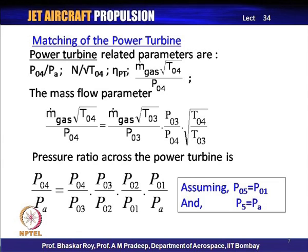If we look at matching of a power turbine — also called free turbine — it is often used for powering the fan or propeller in a two-spool engine. The power turbine and whatever it is powering (fan or propeller) are on a separate power shaft, and this needs to be matched separately from the core generator matching. The power turbine related parameters include the pressure ratio P04/Pa, assuming the exit of the power turbine delivers to atmospheric pressure.